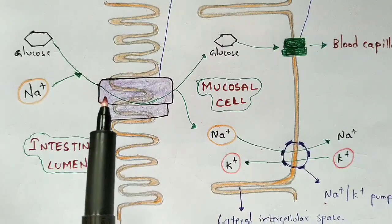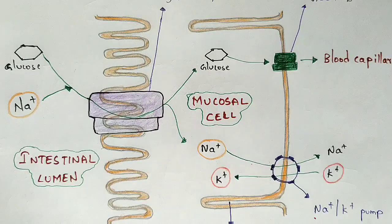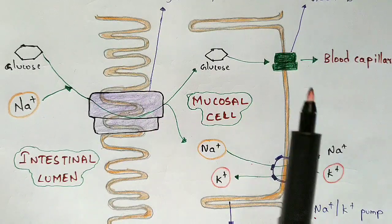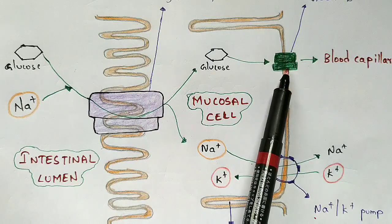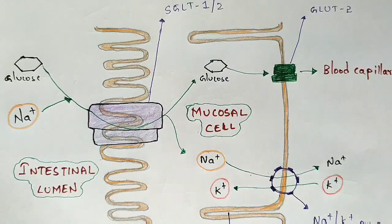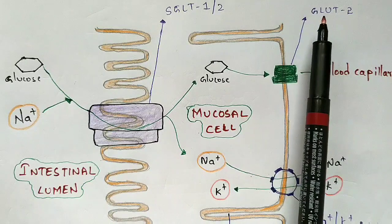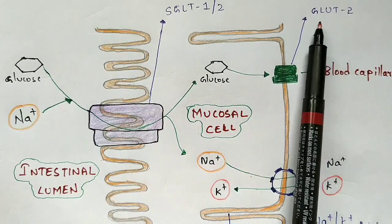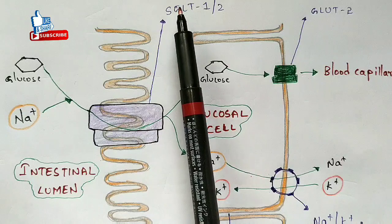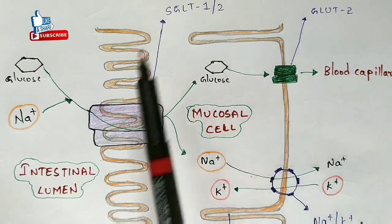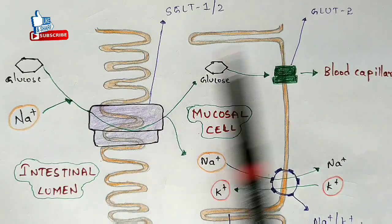The sodium dependent glucose transporter consists of two carrier proteins: SGLT1 and GLUT2. SGLT stands for sodium glucose transporter — S for sodium, GL for glucose, T for transporter. GLUT stands for glucose transporter — GLU for glucose, T for transporter. These two carrier proteins play a major role in transporting glucose from the intestine to the blood.